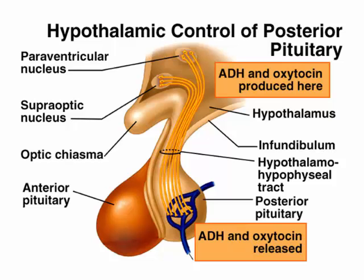First, an anatomy review. Here is the hypothalamus. There are hormones made here that are stored in the posterior pituitary. In the front, the anterior pituitary, there are six hormones we're going to learn about. These two — ADH and oxytocin — are made in the hypothalamus, stored in the posterior pituitary, and released there into the bloodstream.